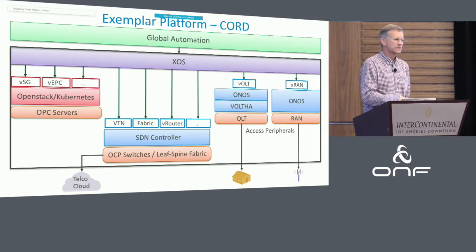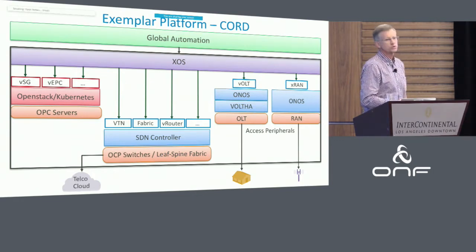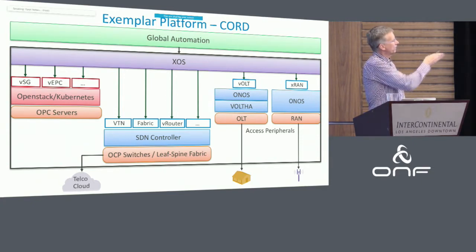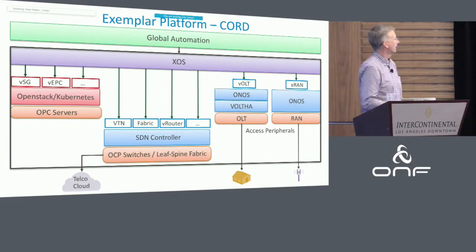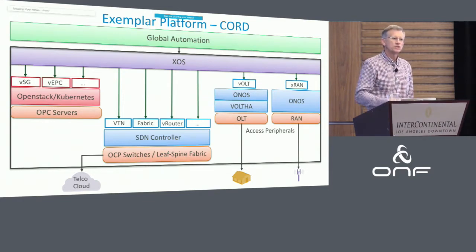We've made some design decisions: we've got a particular set of services — it might include a virtual EPC, a virtual subscriber gateway, a virtual BNG, a virtual OLT, and a virtual RAN. We're going to plug in ONOS as a controller for the RAN, ONOS and Voltha as the controller for the PON, and Trellis and ONOS as the controller for the leaf-spine fabric. Those are some specific implementation choices for this exemplar.